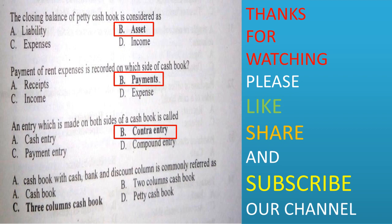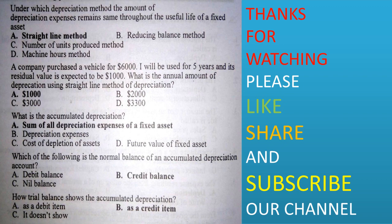A cash book with cash, bank, and discount columns is commonly referred to as: cash book, two-column cash book, three-column cash book, or petty cash book. Option C is correct. Under which depreciation method does the amount of depreciation expense remain the same throughout the useful life of the fixed asset? Straight-line method, reducing balance method, number of units produced method, or machine hour method. Option A is correct.